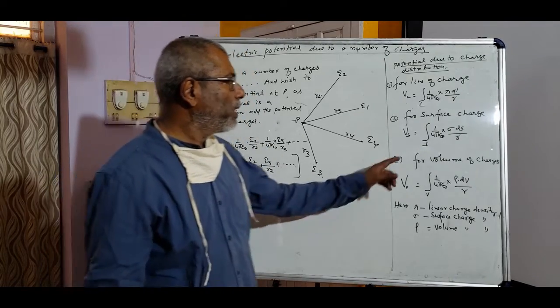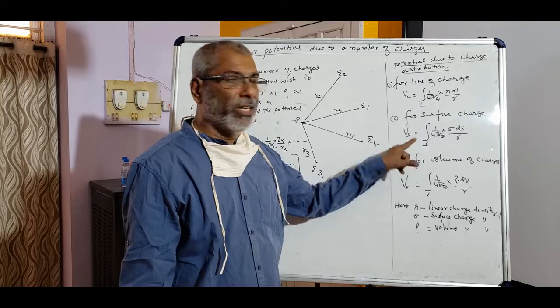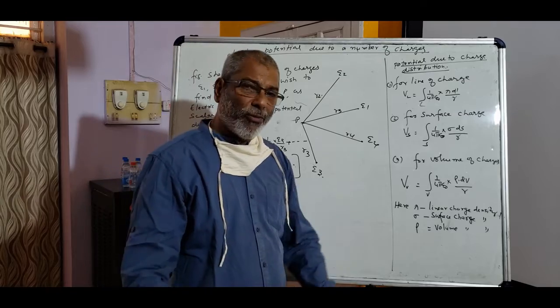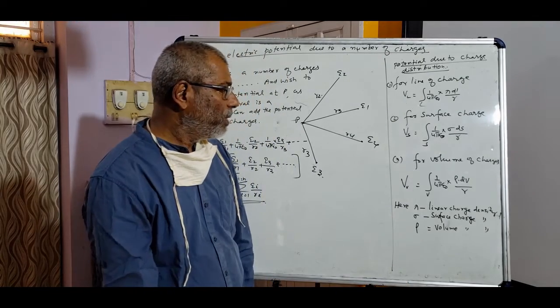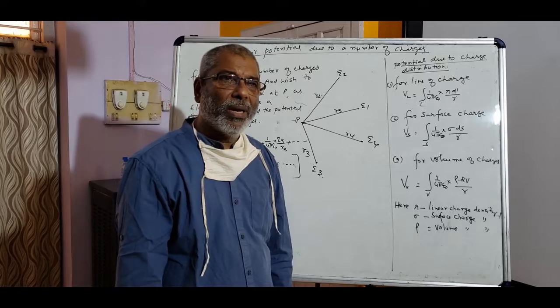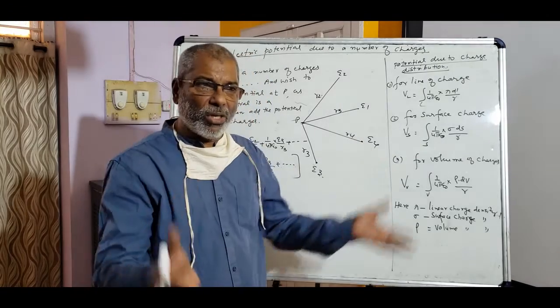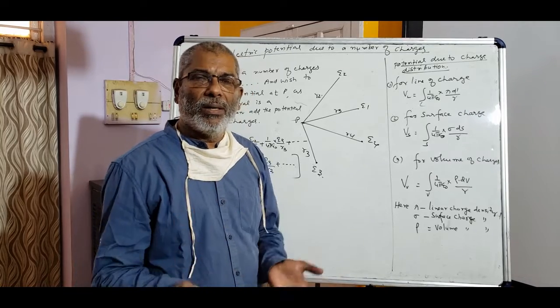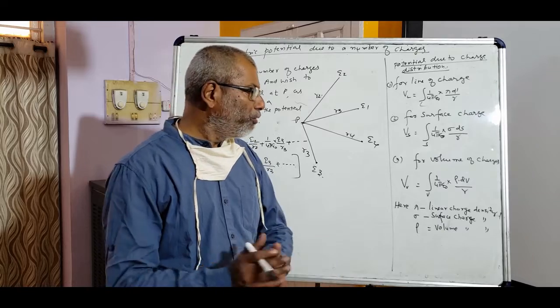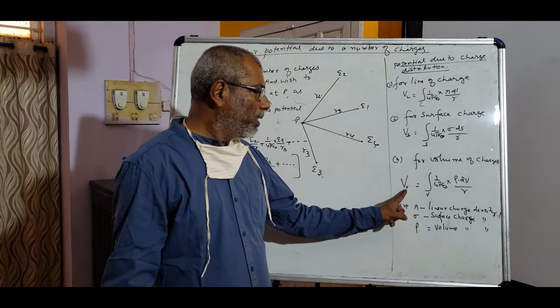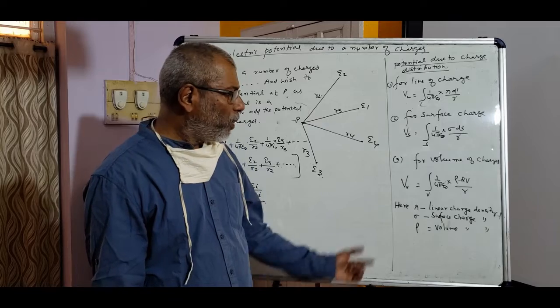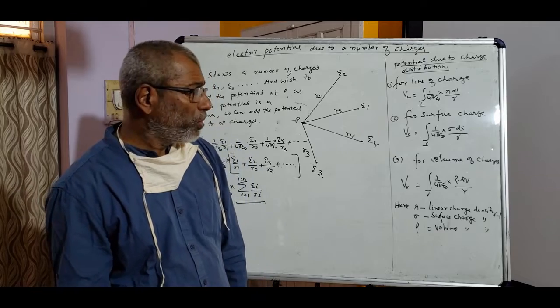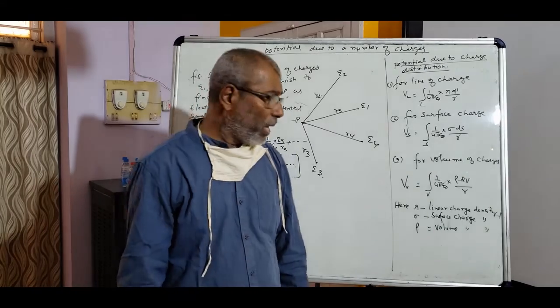For surface charge distribution we can write Vs is equal to surface integral, 1 by 4 pi epsilon 0 sigma ds by r. And for a volume of charge, that is volume distribution of charge, a vessel or a body which is given charge and also inside the body the charge is distributed uniformly. In that case, the potential due to the volume of charge is given by volume integral, 1 by 4 pi epsilon 0, rho dv by r.